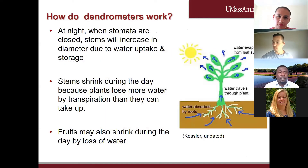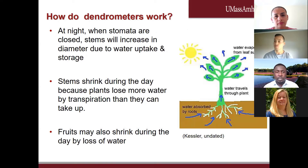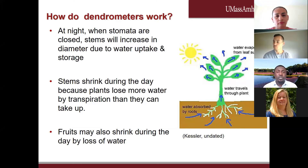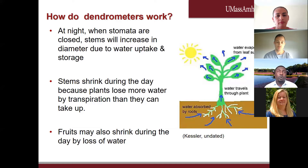Dendrometers work through the transpiration process. At night, when the stomata are closed on a tree, the tree takes up water from the soil. Because there's no transpiration, water is stored inside the tree, and the stem expands — so you have your maximum stem expansion in the morning before sunrise. During the day, as soon as light comes out, stomata open, gas exchange begins, and the tree starts losing water. The stem starts to contract, and this contraction is related to evaporative demand. If you have high evaporative demand or high stress conditions, your stem is going to shrink more, which is an indicator that you may need to start irrigating.